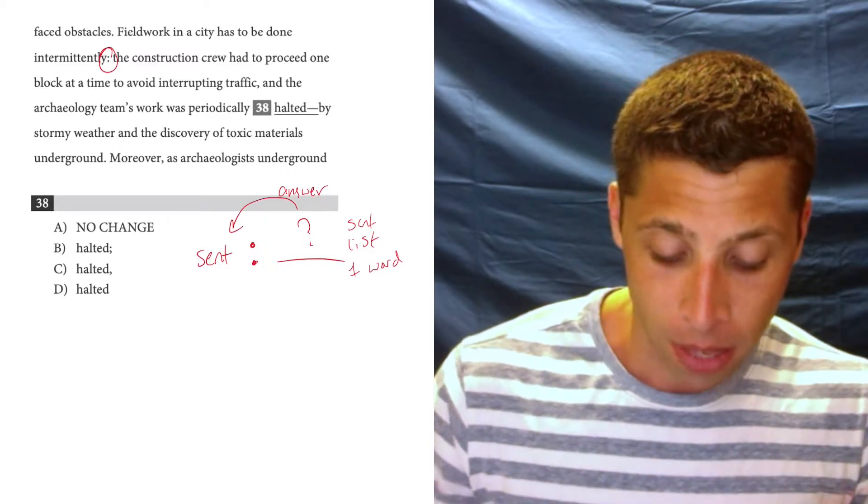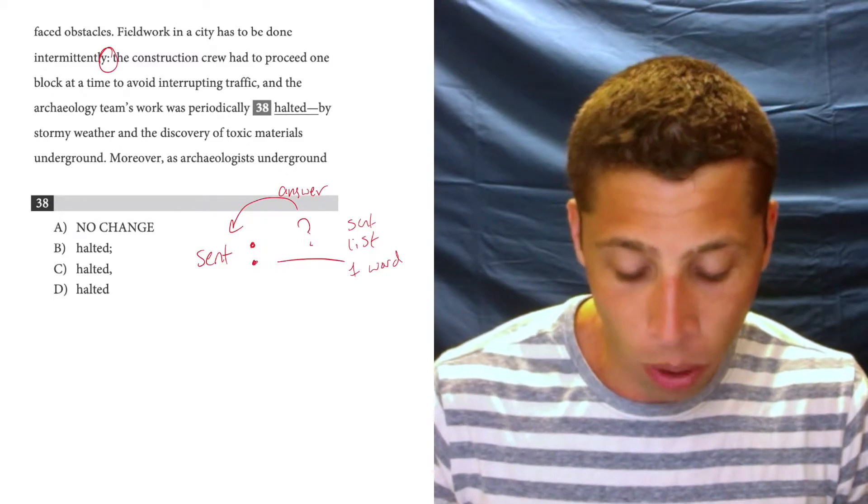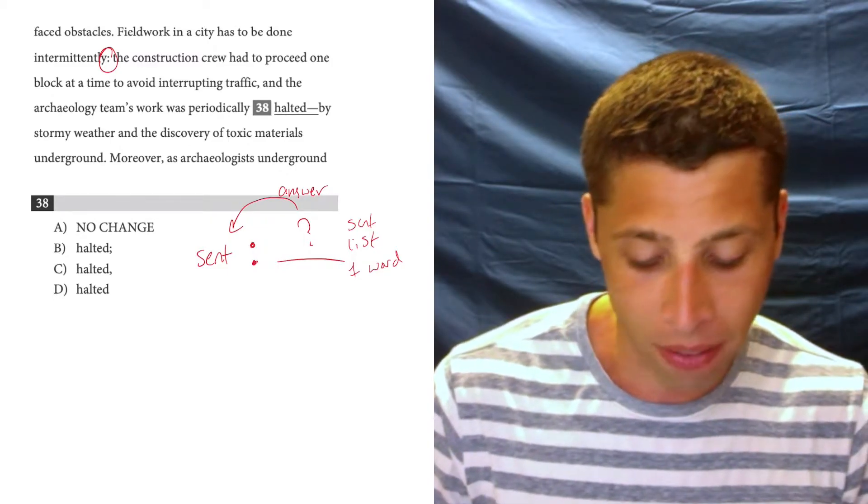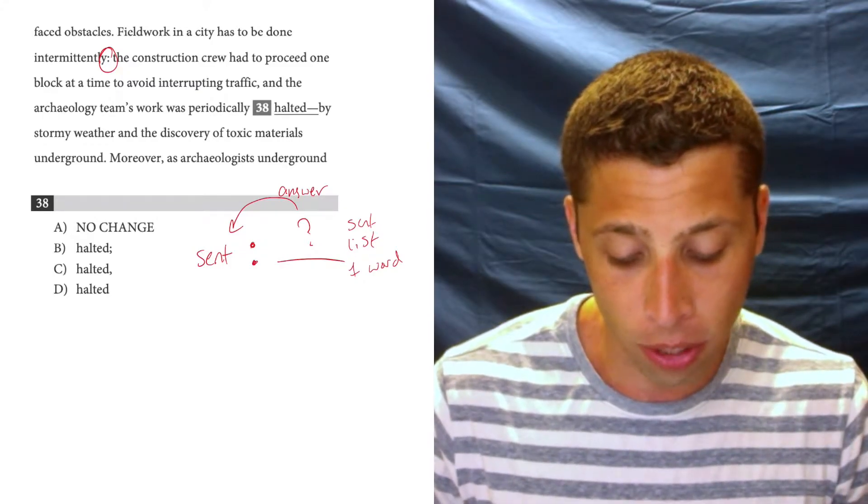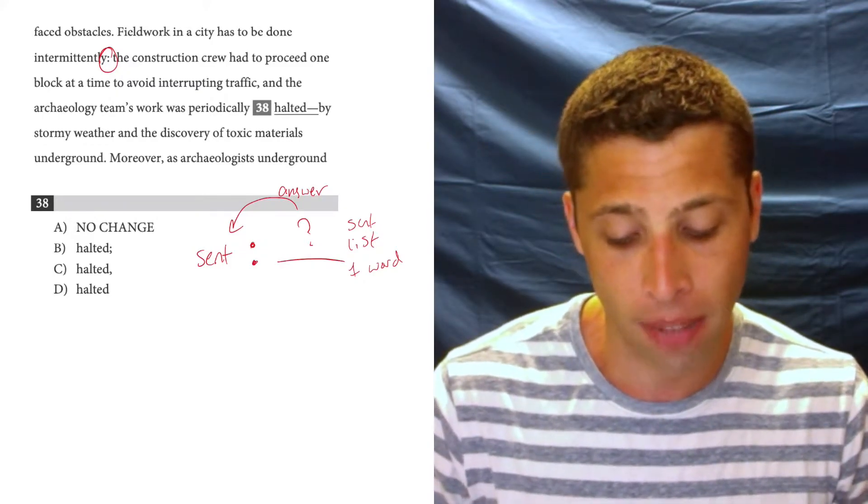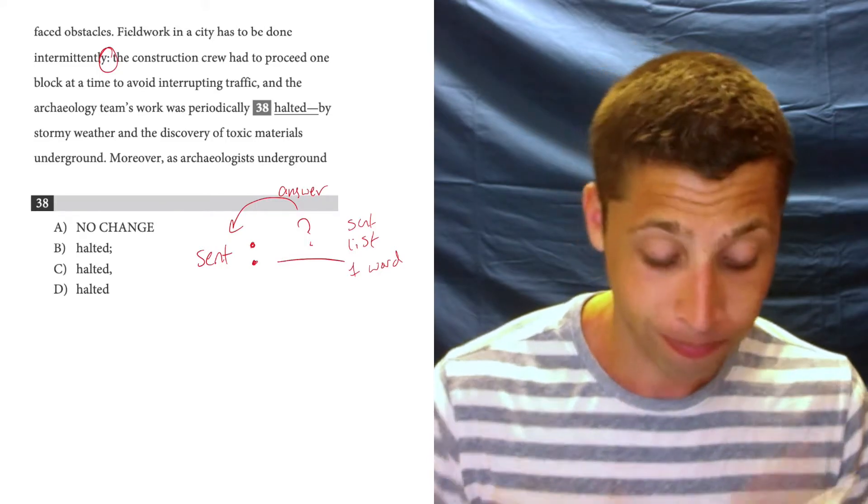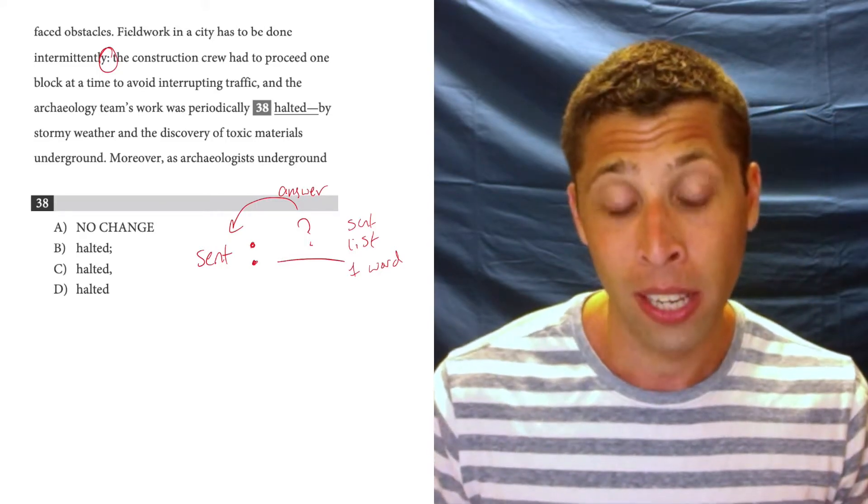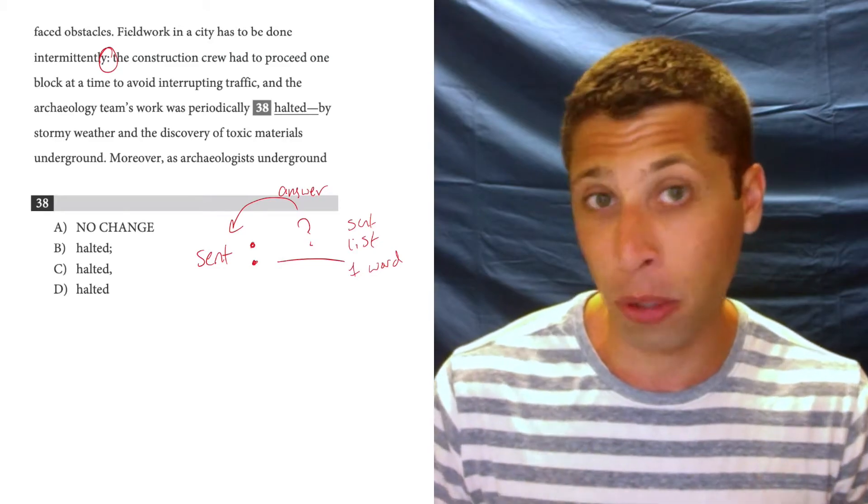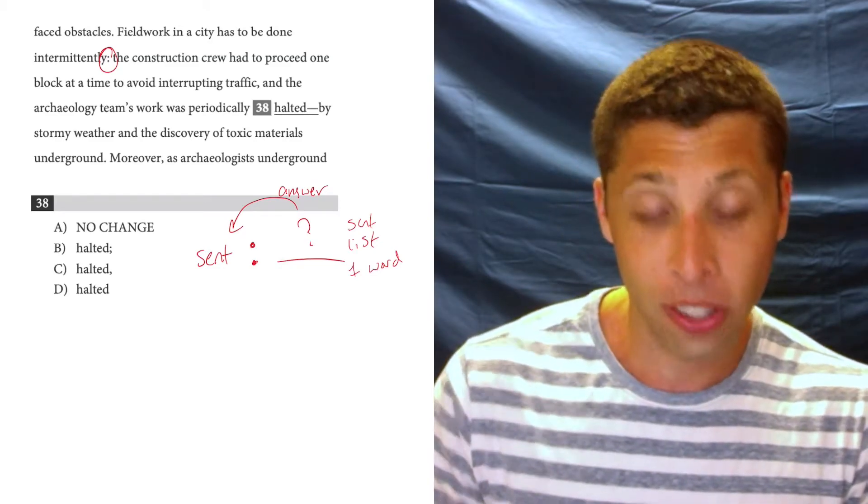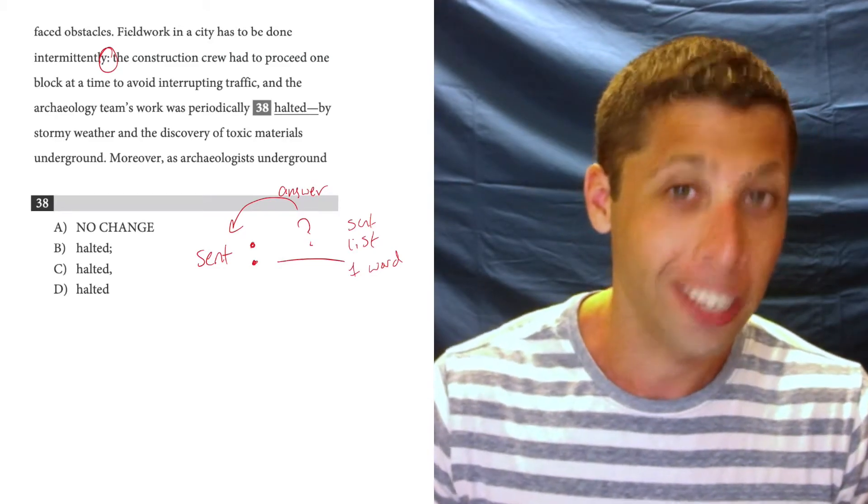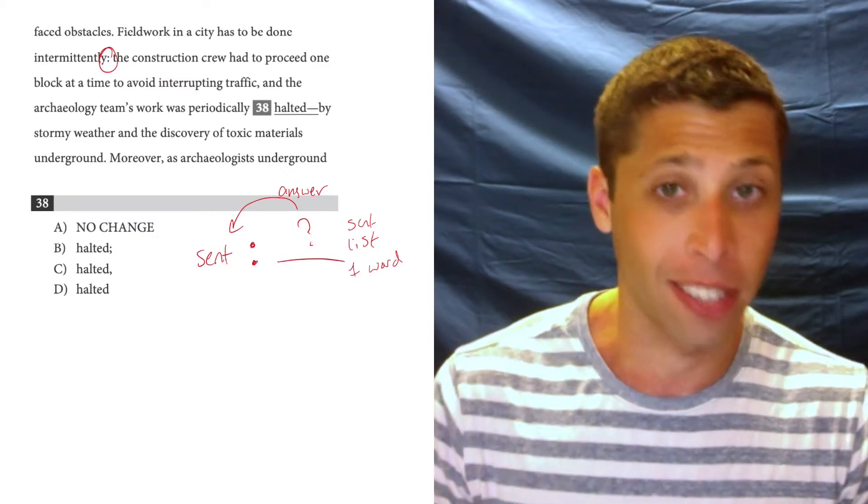Then the next part. The construction crew had to proceed one block at a time to avoid interrupting traffic, and the archaeology team's work was periodically halted by stormy weather and the discovery of toxic materials underground. That's long. That goes to show you how flexible colons can be here. The sentence that comes before is shorter than the thing that comes after, and it is a sentence, right?